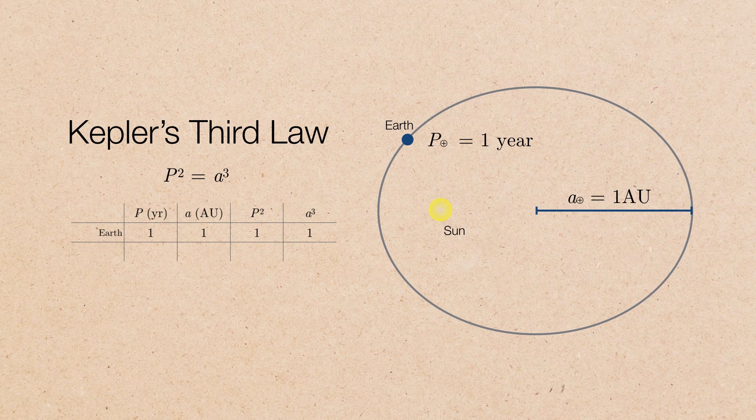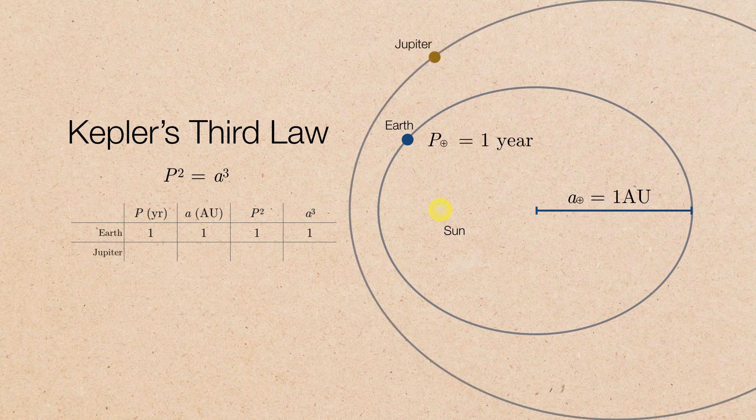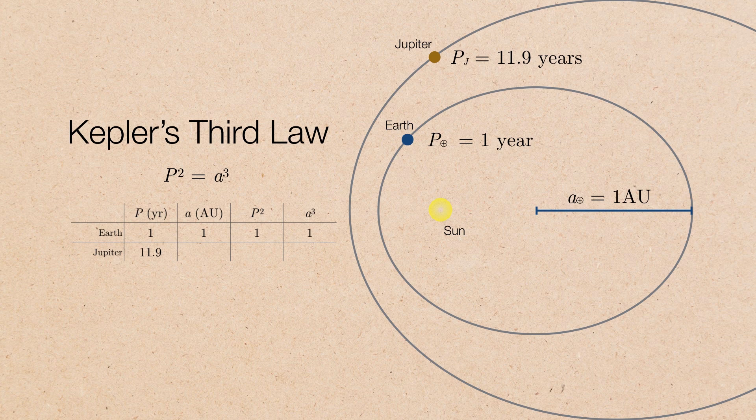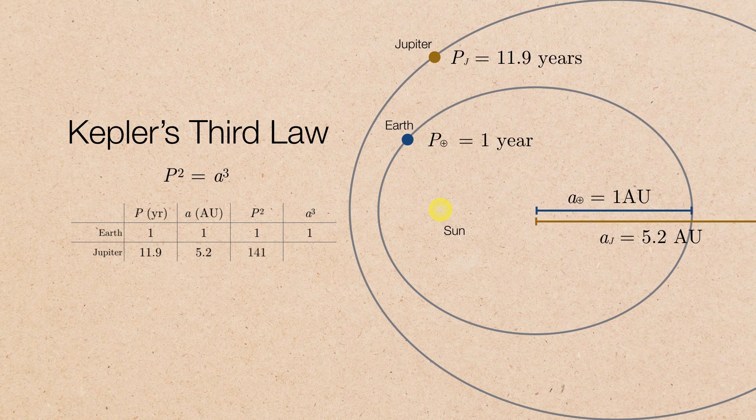Now let's use a more distant planet. In this example, we'll go ahead and use Jupiter. It has an orbital period of just under 12 years and a semi-major axis of 5.2 astronomical units. So if we take its orbital period, 11.9 years, and square it, we get 141. And if we take its semi-major axis, 5.2 AU and cube it, we also get 141. And every planet in our solar system, you can perform this exact same exercise for, and you'll find that its period squared is always going to be equal to its semi-major axis cubed.